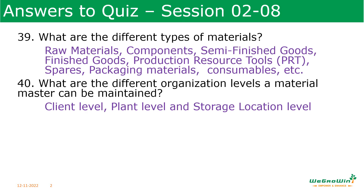The second question: what are the different organization levels at which a material master can be maintained? The material master can be maintained at client level, plant level, and storage location level. At client level, general material data valid for the whole company is stored. At plant level, data valid within the plant and applied for all storage locations is saved. At storage location level, data valid for a particular storage location is stored.